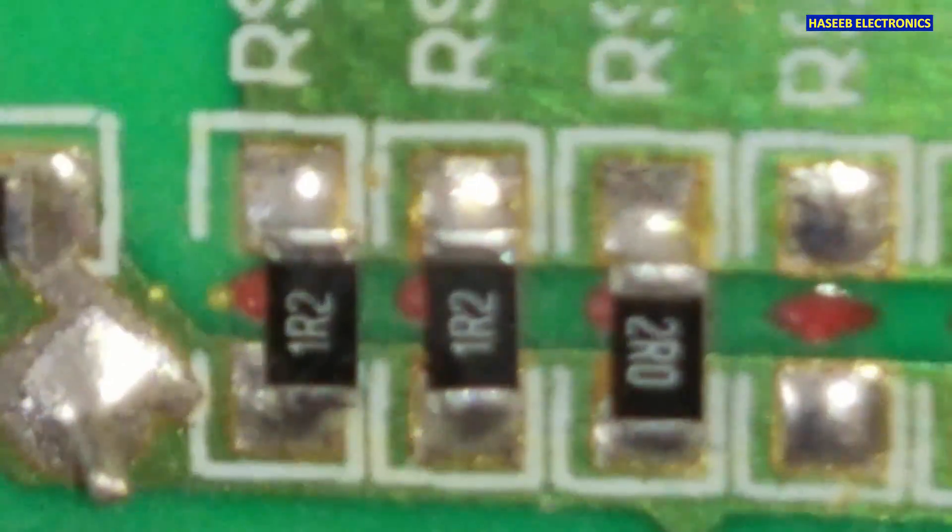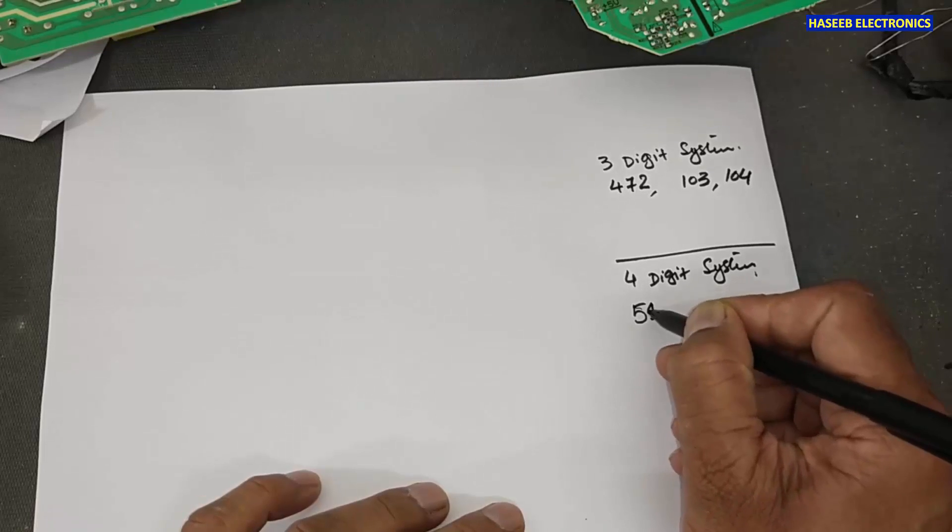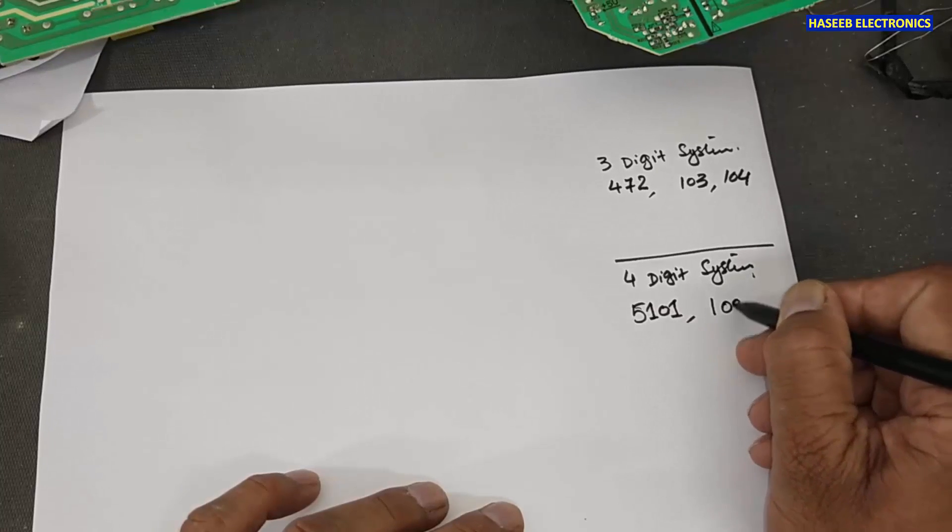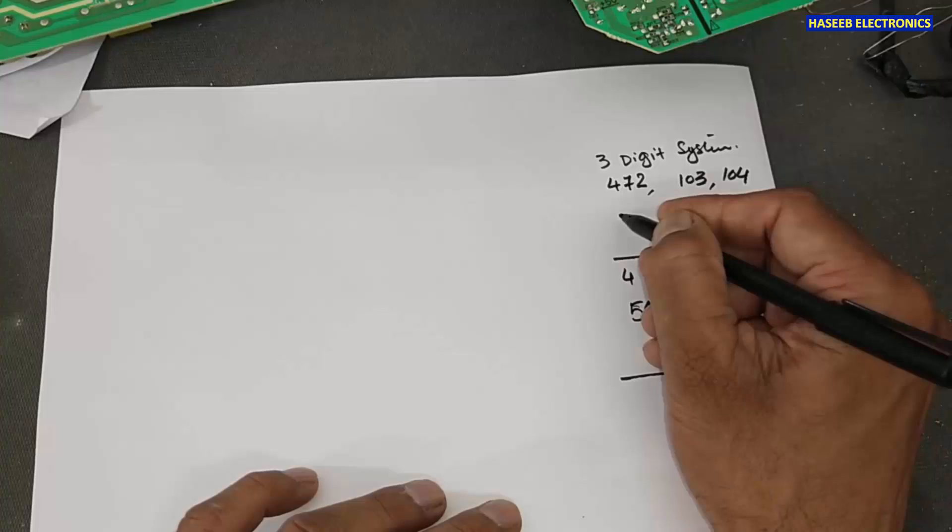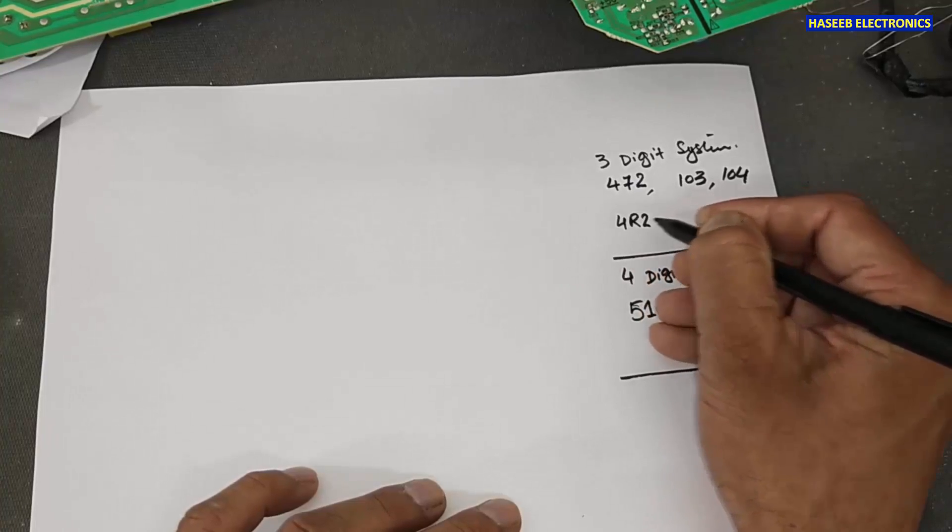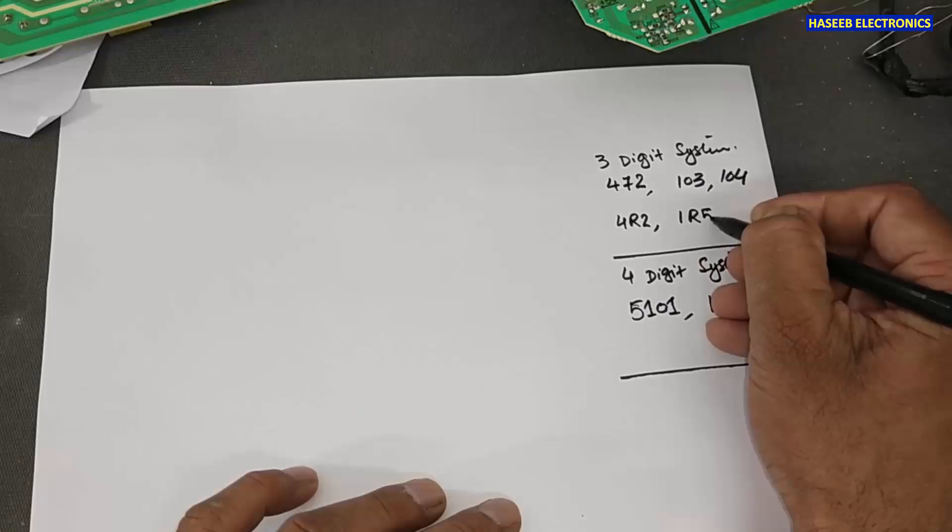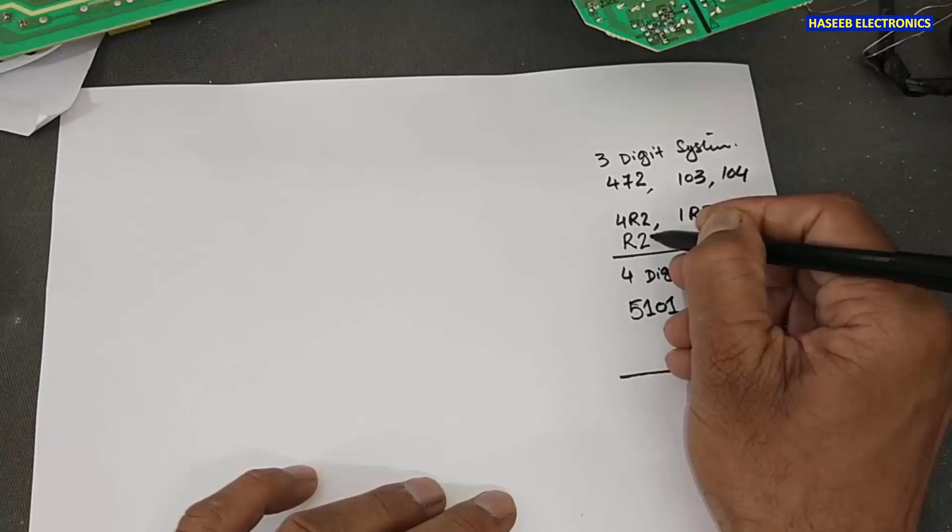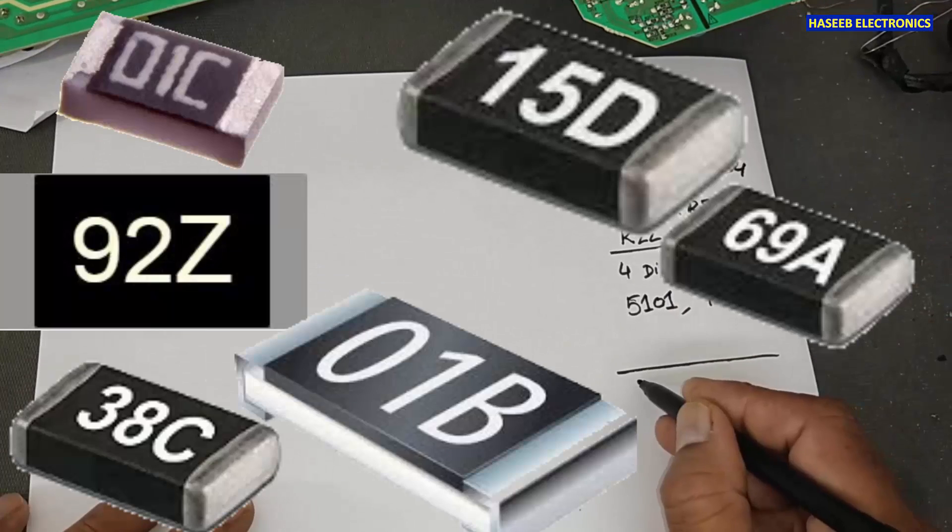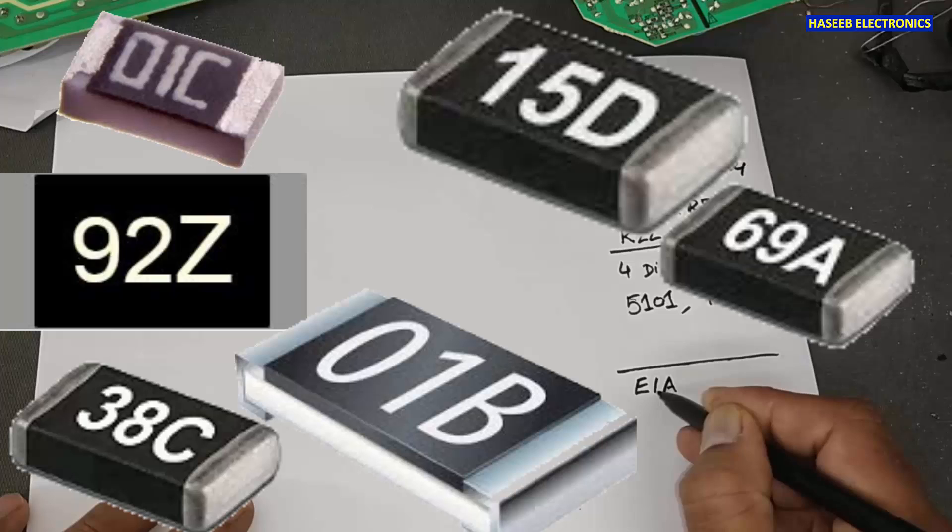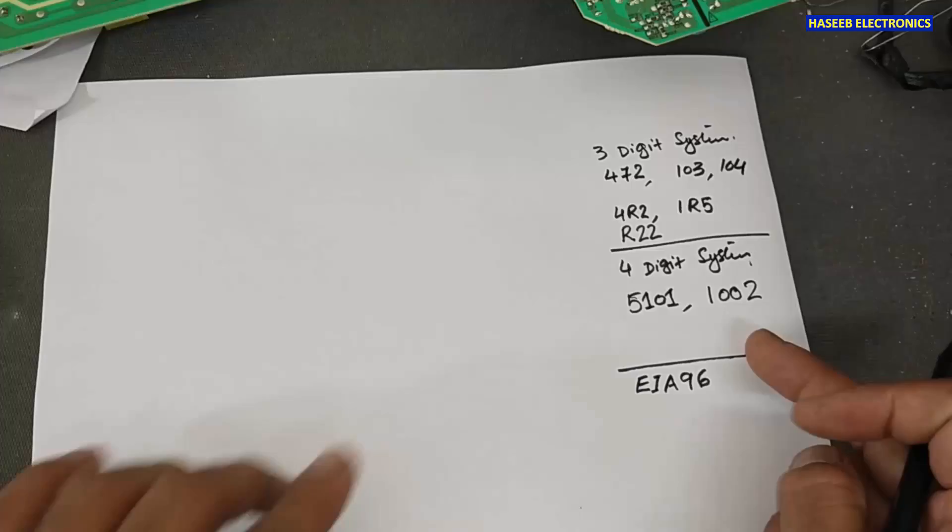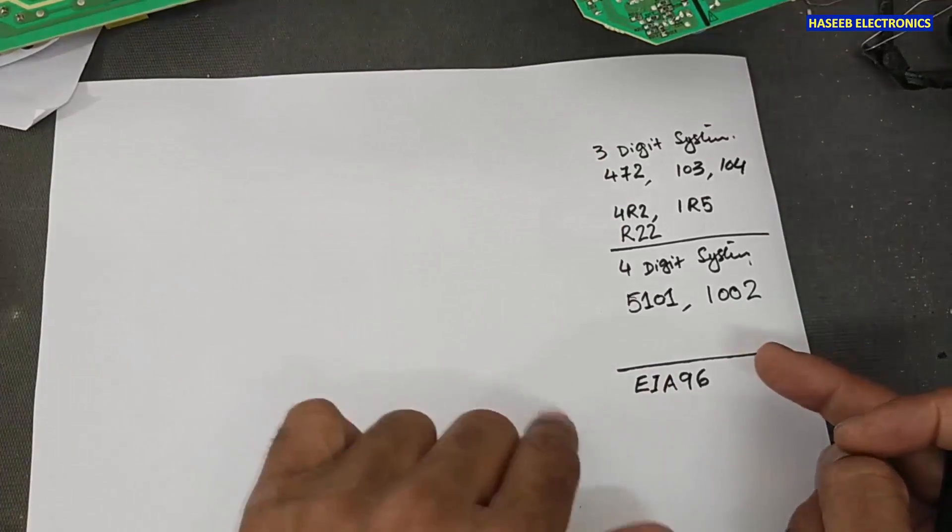220, then 1R2, 1002, 5101, 1002. And here is four-digit system. 4R2, 1R5 and same here R22. Then the next system EIA96 system. These different systems we will see here.